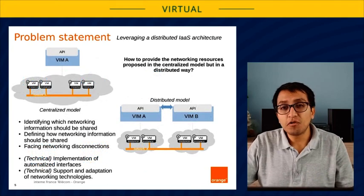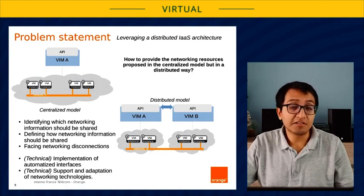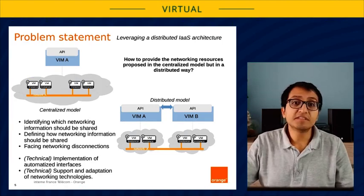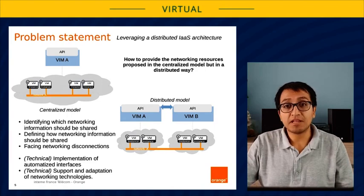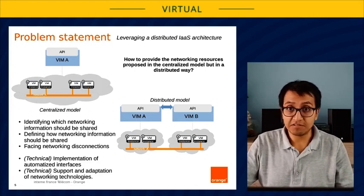So, how to provide the networking resources proposed in the centralized model, but in a distributed way? With this, I mean the networks, sub-networks, routers, service function chaining, and other networking objects proposed by a single Neutron instance.